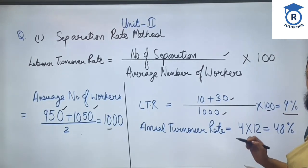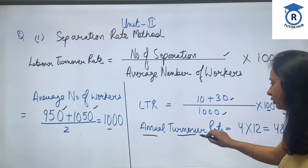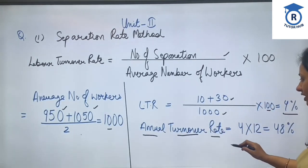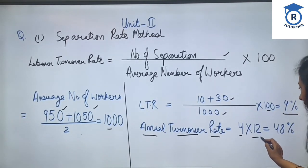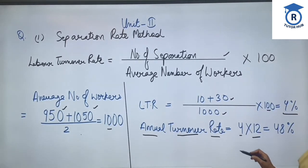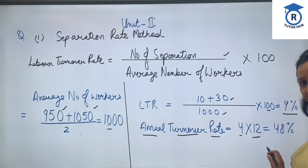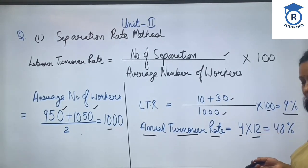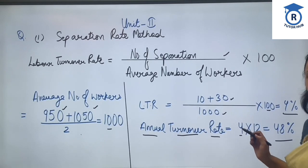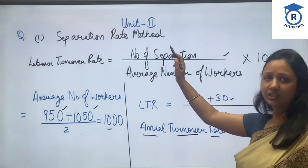The monthly labor turnover rate by the Separation Rate Method is 4%. To find the equivalent annual rate, we multiply by 12 (number of months in a year), giving us 48% as the annual turnover rate by the Separation Rate Method.